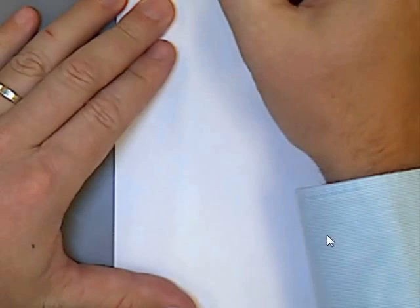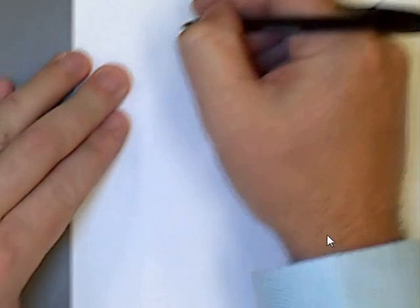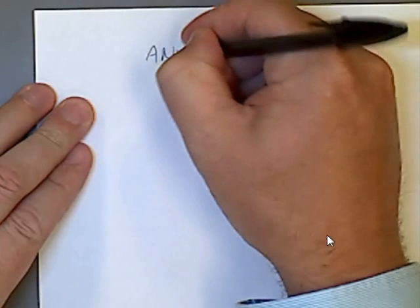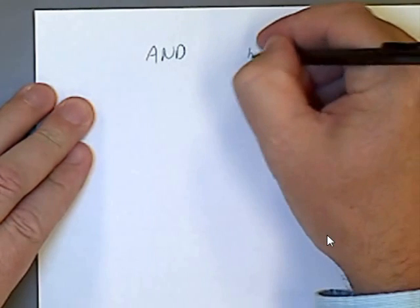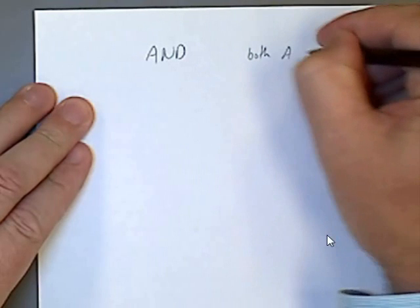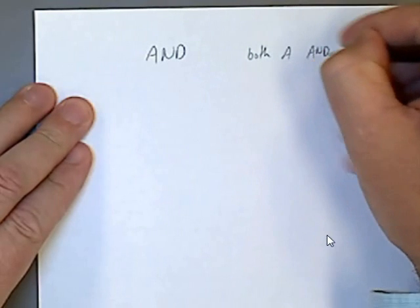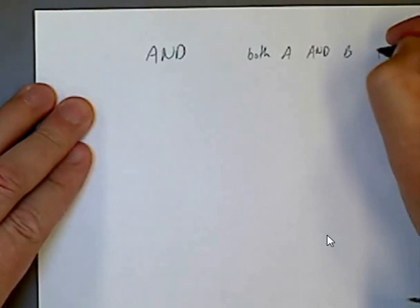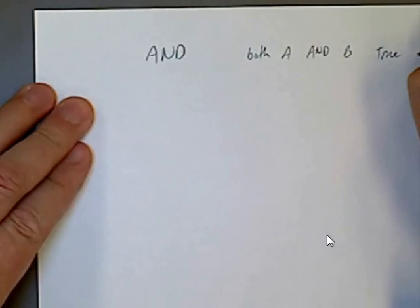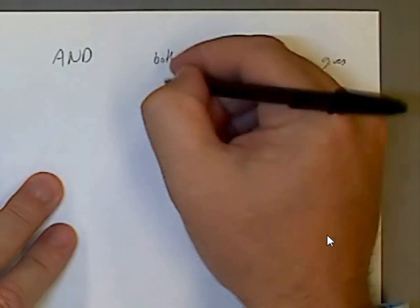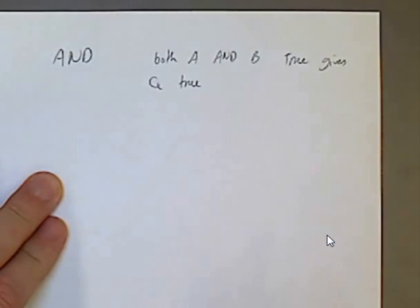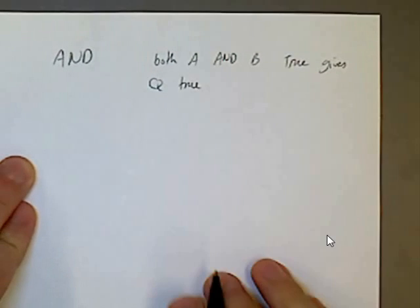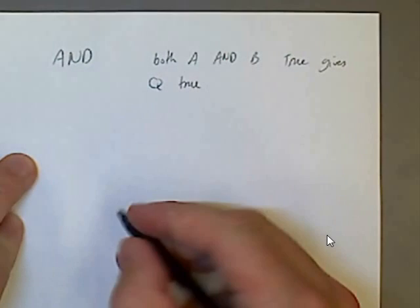In the logic of AND, we need both A AND B TRUE gives output Q TRUE. So I'm going to call the output of this one Q.